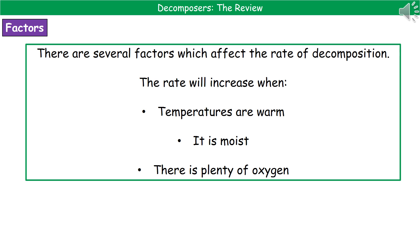We need to know the factors that affect the rate of decomposition. If a question asks how to increase the rate of decay, temperatures need to be warm. Don't say high temperatures — remember, these are living things containing enzymes. If the temperature is too high, enzymes will be denatured and won't work. If the temperature is too low, enzymes are much slower, less likely to collide with the substrate, and the rate of decomposition will be low. So warm temperatures is the correct phrasing.